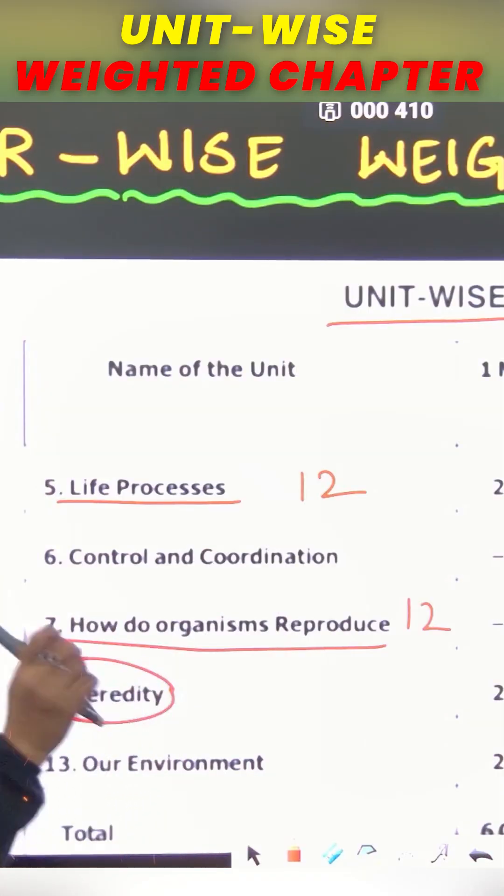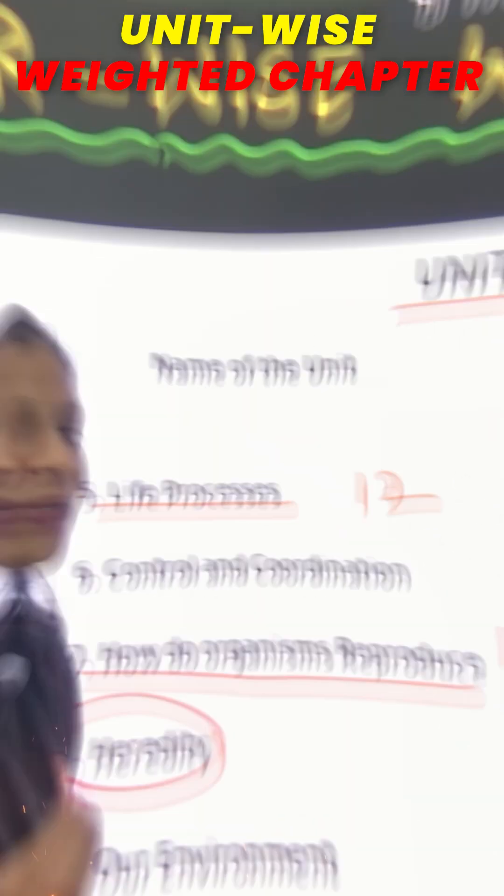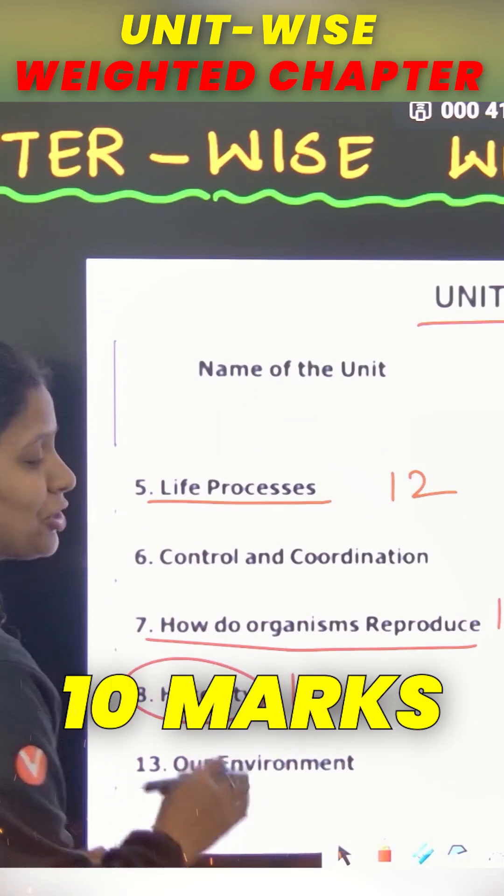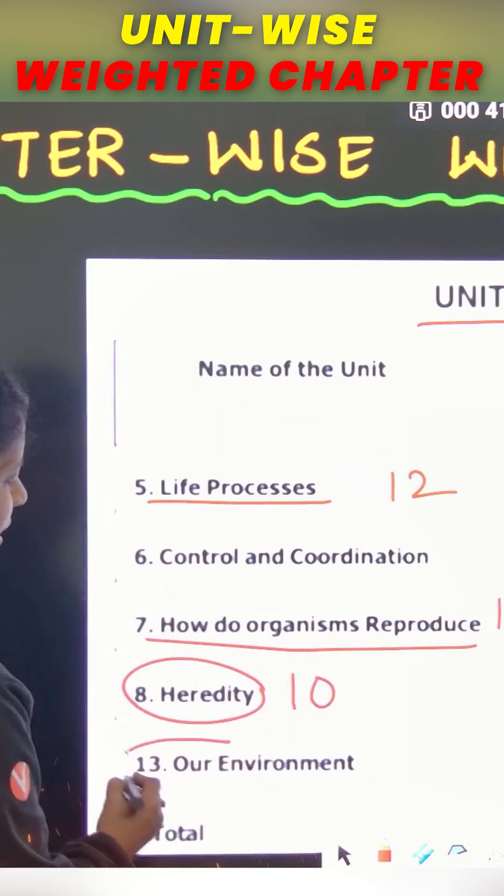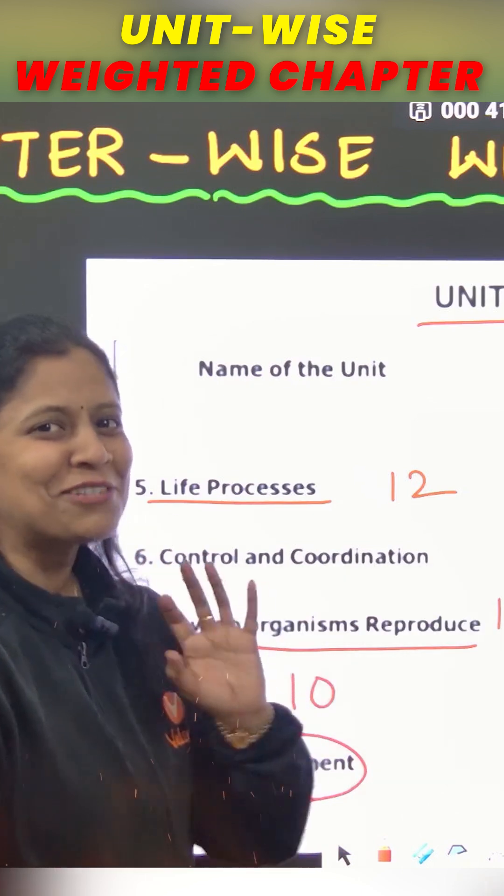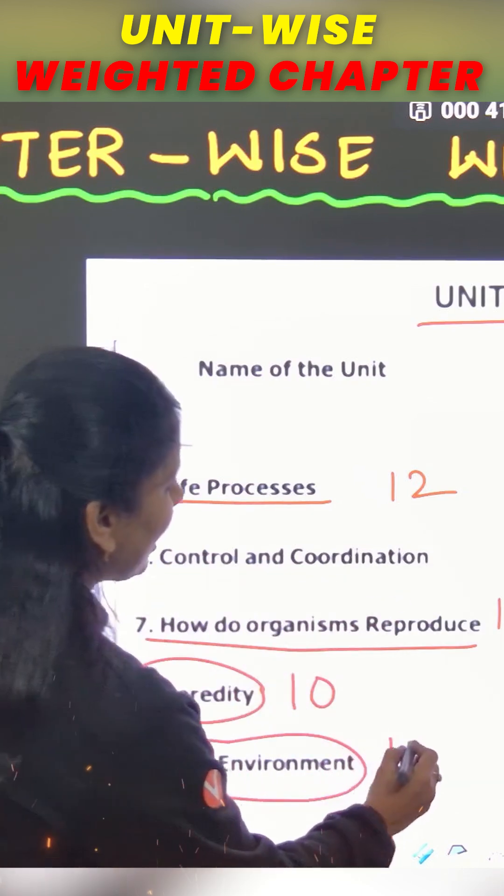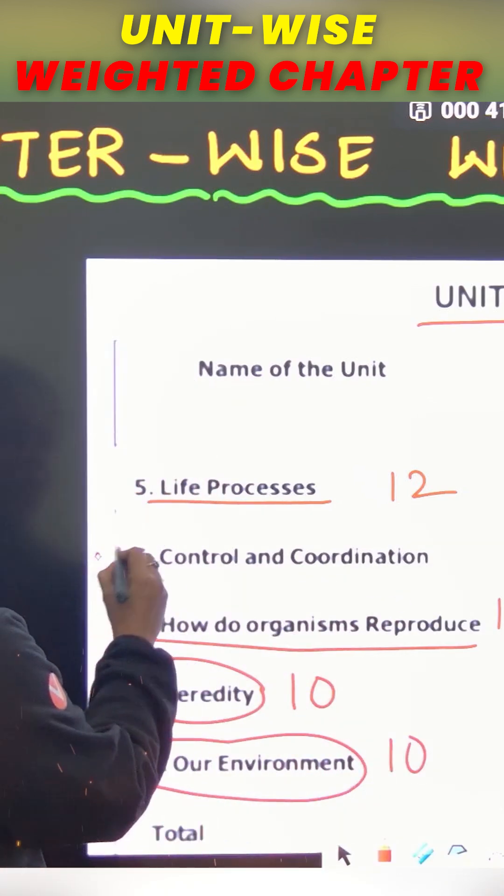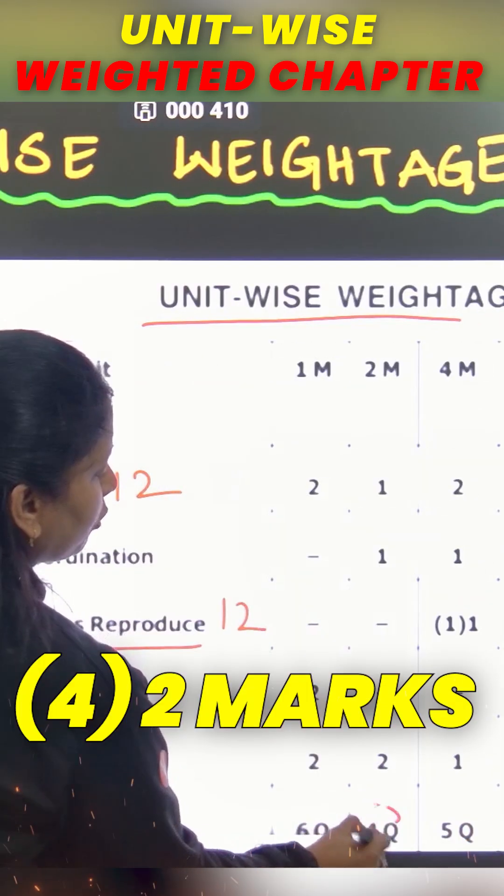Heredity actually is a little difficult, but believe me, so direct 10 mark question, no internal choice. Our environment has a lot of short chapters, very small chapters and heredity is a little less important. 2 mark questions, 4 2 mark questions will be there.